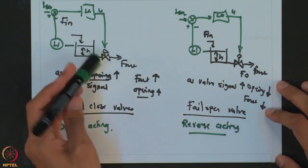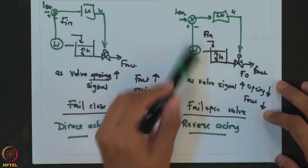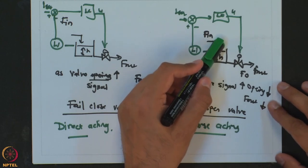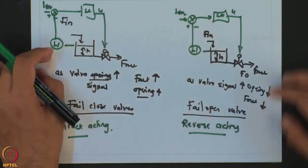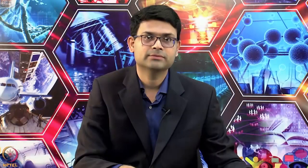If we mistakenly use a direct acting controller for a fail-open valve system, it will never be able to maintain the level, and we will see why through mathematical analysis as well. So it is very important to know the type of controller action. Let us now look at what are the different types of control actions possible in feedback control. The first and simplest control action — simplest in terms of implementation — is on-off control.